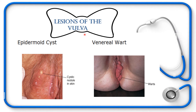Common lesions of the vulva include: epidermoid cysts — small, firm, round cystic nodules in the labia, usually yellowish in color. Look for the dark punctum marking the blocked opening of the gland. Venereal warts, also known as condyloma acuminatum, are warty lesions on the labia and within the vestibule, often due to infection with human papillomavirus.